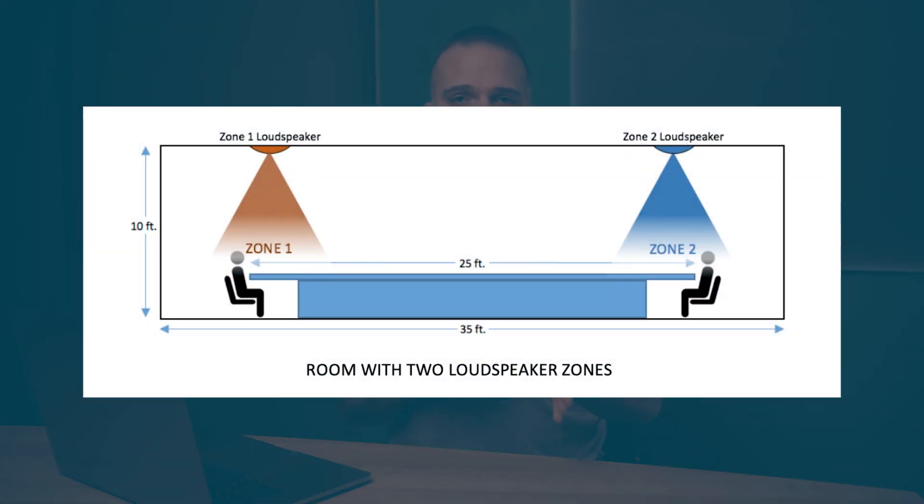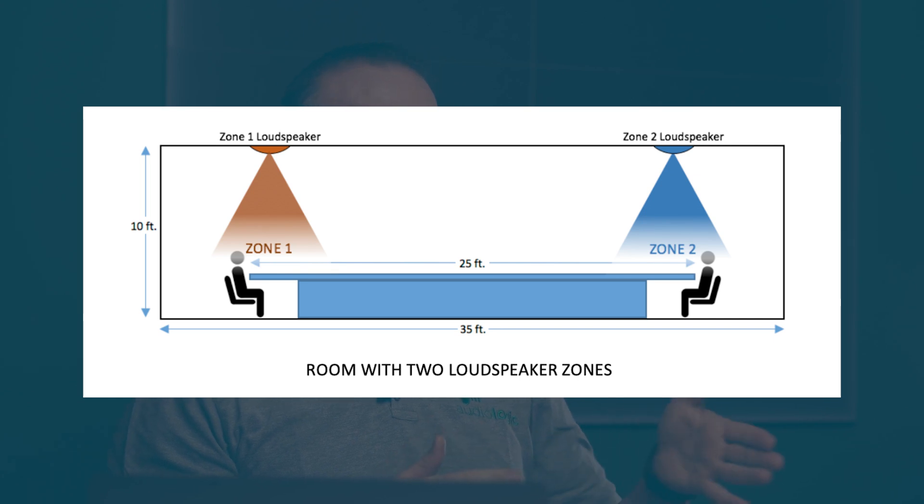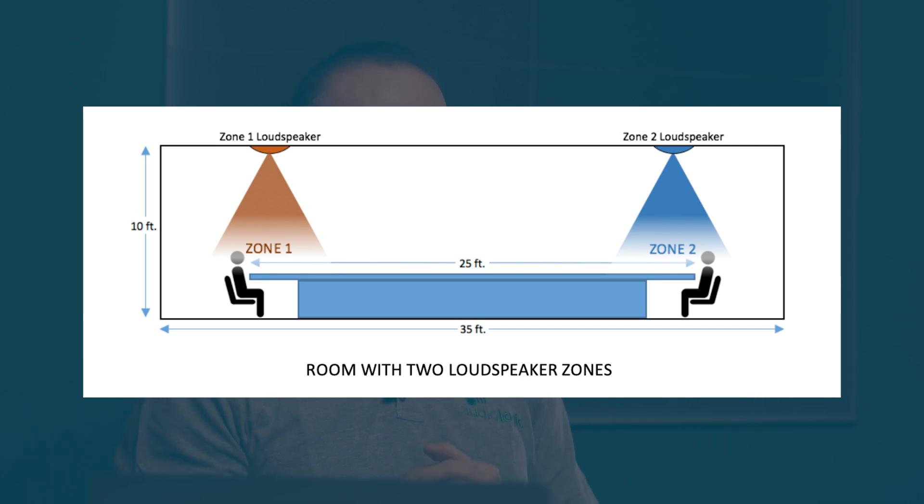Attempting to implement a voice lift system in rooms with these conditions would probably not work. So, having considered these points, if the room is eligible for a voice lift system, the next step is to look at zoning the speakers within the room. In order to obtain adequate levels for the voice lift, the signal from the microphone should be reproduced only through the speakers located at the most distant point from it. To achieve that, we use different zones in the room, allowing us to route these signals.